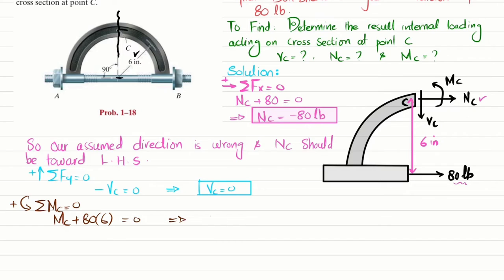From here you will get Mc equals minus 480 pounds-inch. This is the reaction moment.